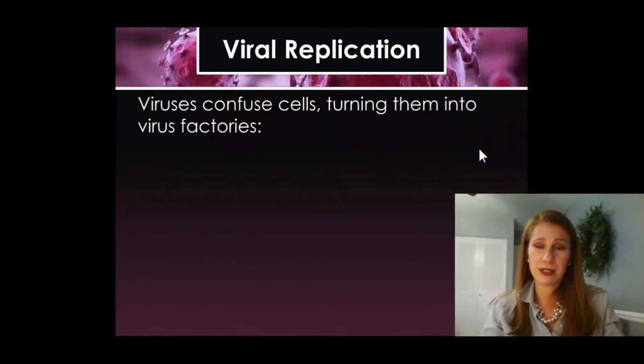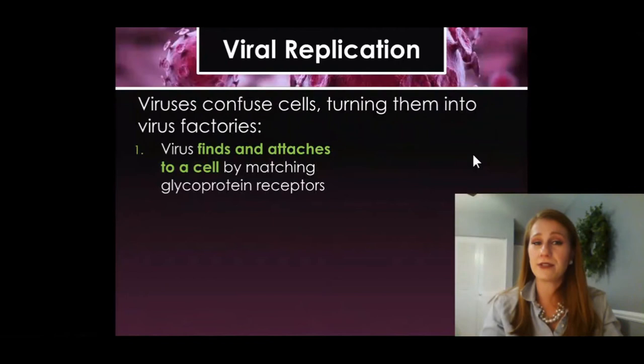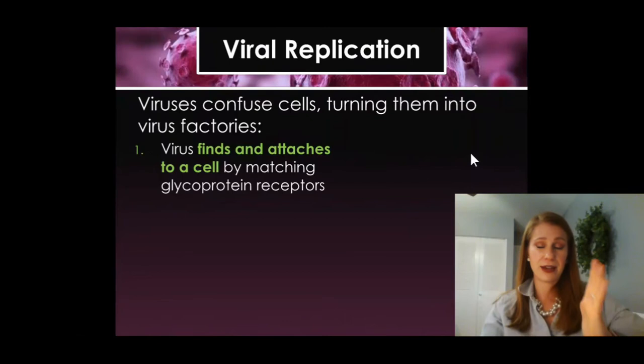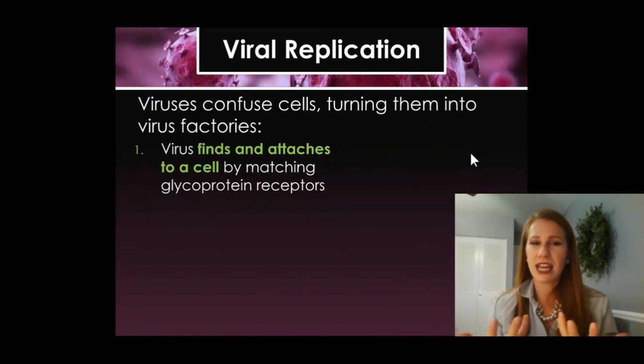When we talk about viral replication, they are essentially tricking your cells. Viruses are kind of like masters of disguise, and they use this camouflage to help get into our cells. The first thing a virus does is it finds and attaches to a specific kind of cell by matching up those glycoproteins. If the glycoproteins don't match, that cell isn't going to grab it and bring it in. That cell will just bounce right off.